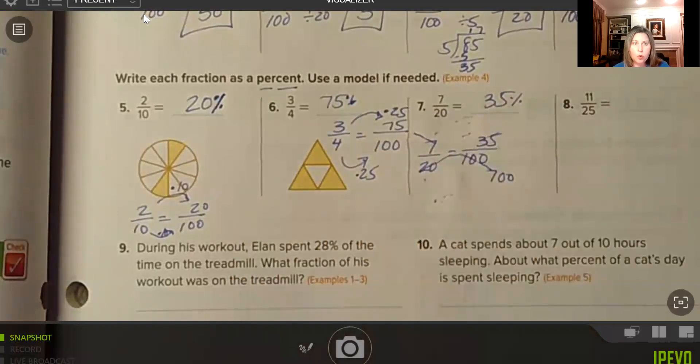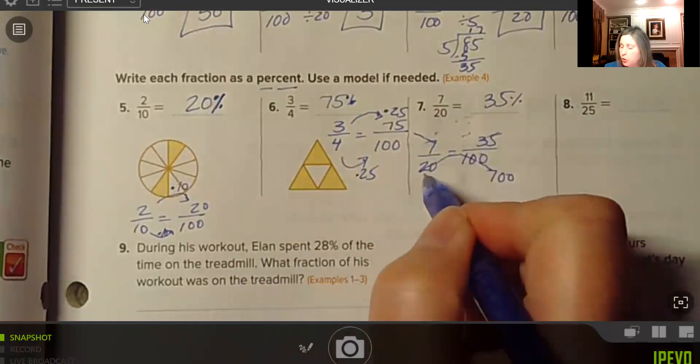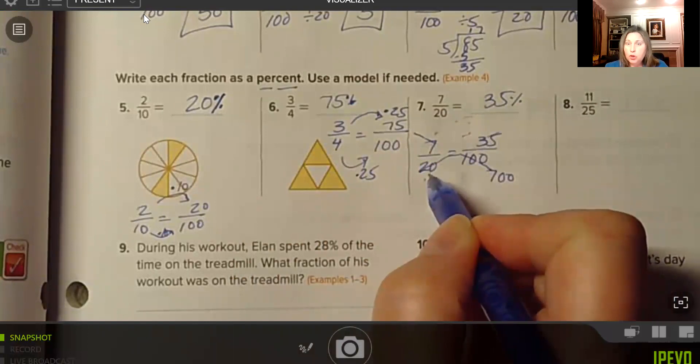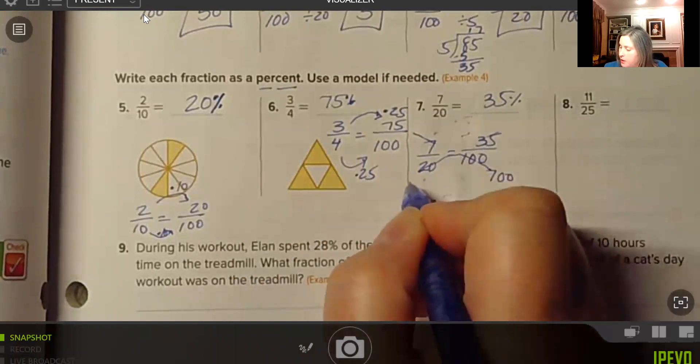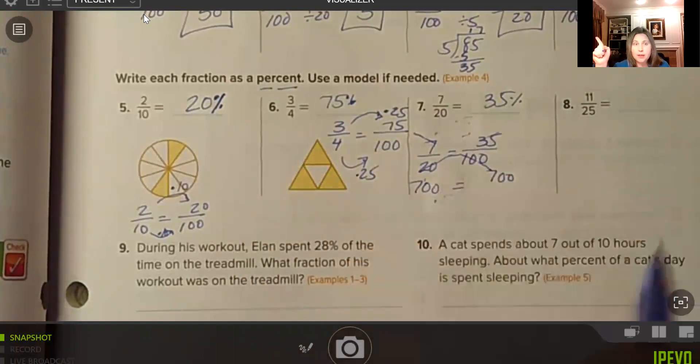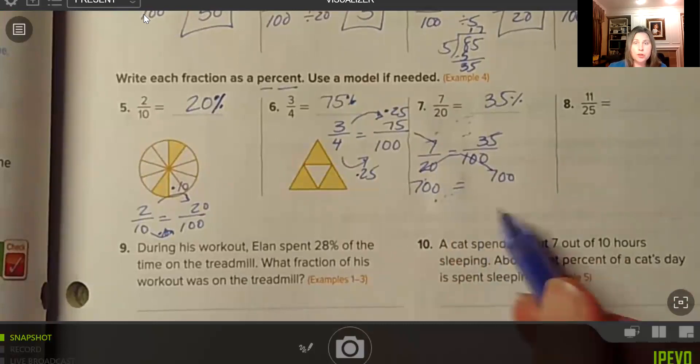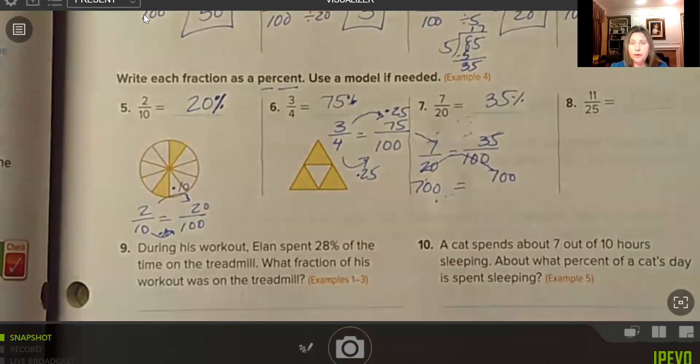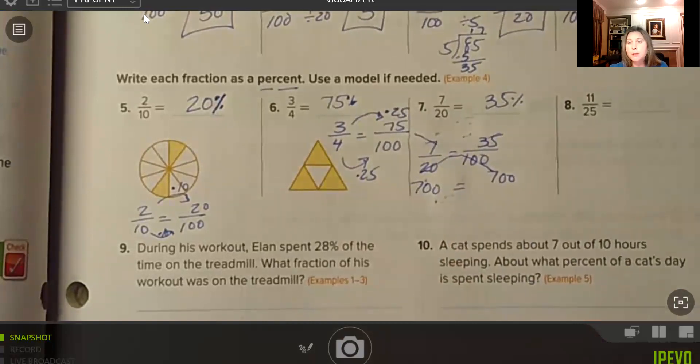And then 35 times 20. I'm not great at multiplying by 20, but I can multiply by 10 and then double that. So multiply by 10 and then by 2. So 35 times 10 is 350 times 2 is 700. So you can always check for proportionality by multiplying your cross products together. And you'll know if you have the correct proportion, which we do here. So that was just an extra little way that you can check your equivalent fractions.